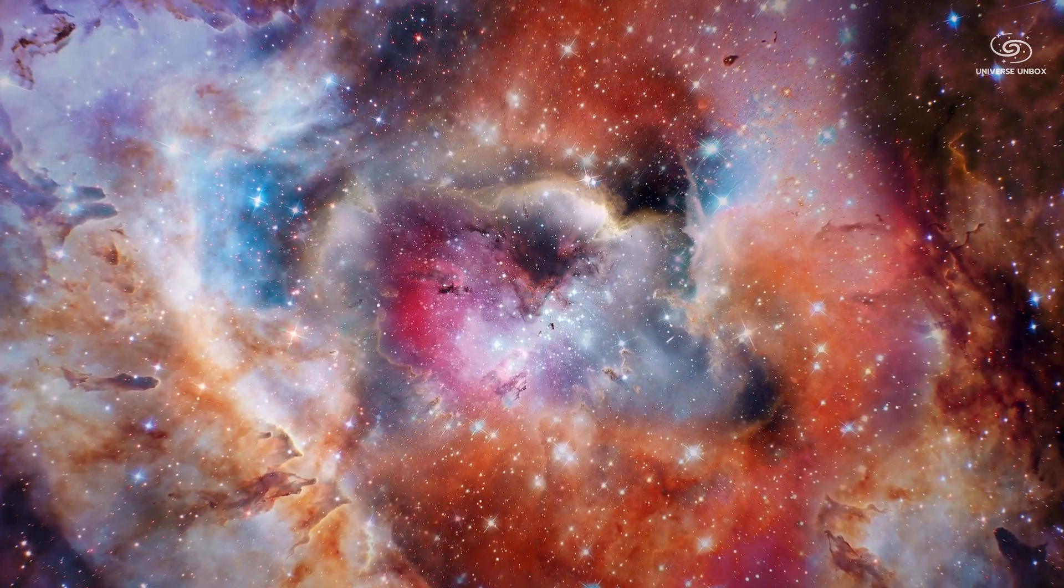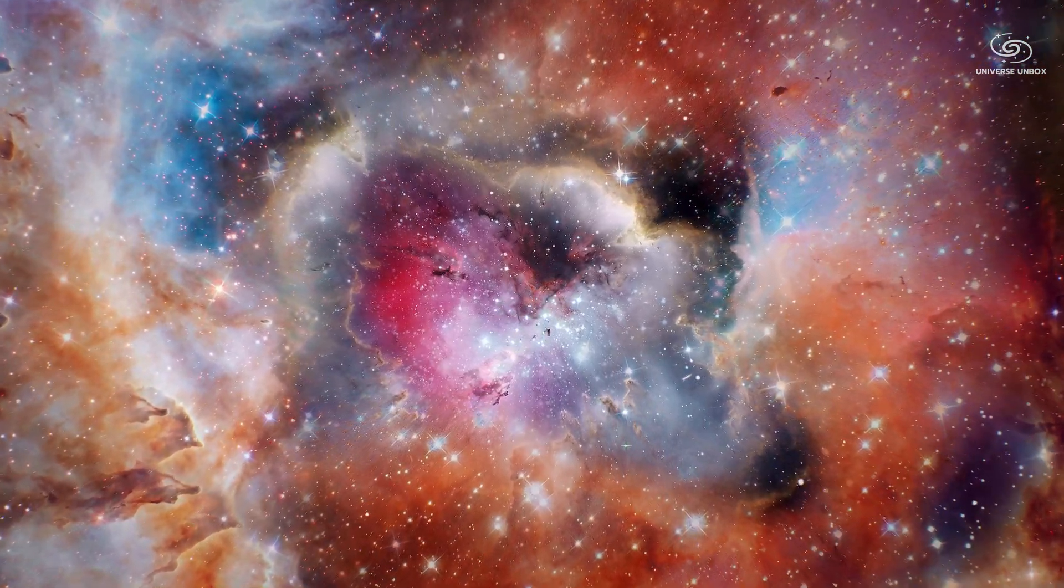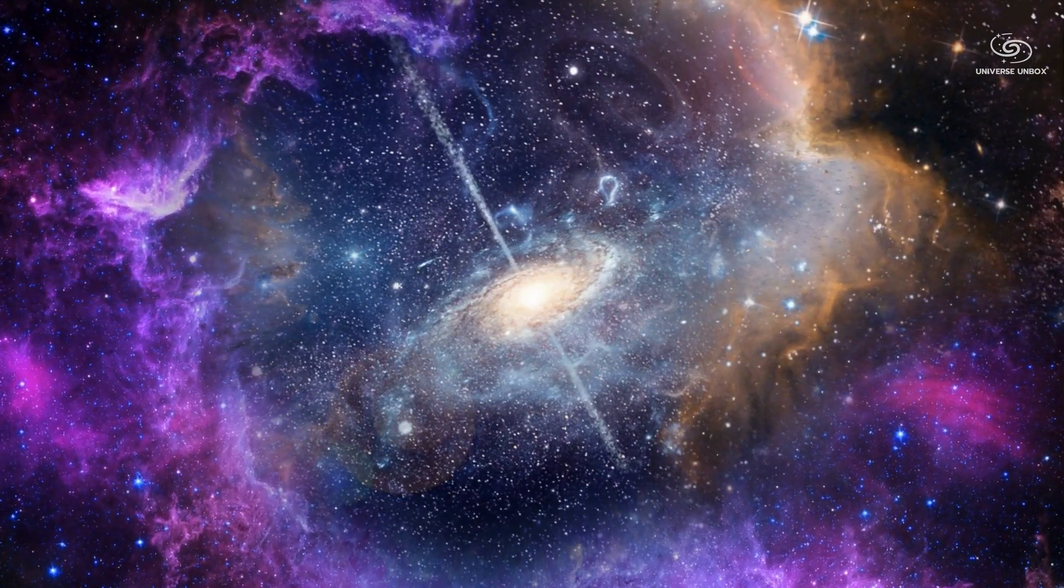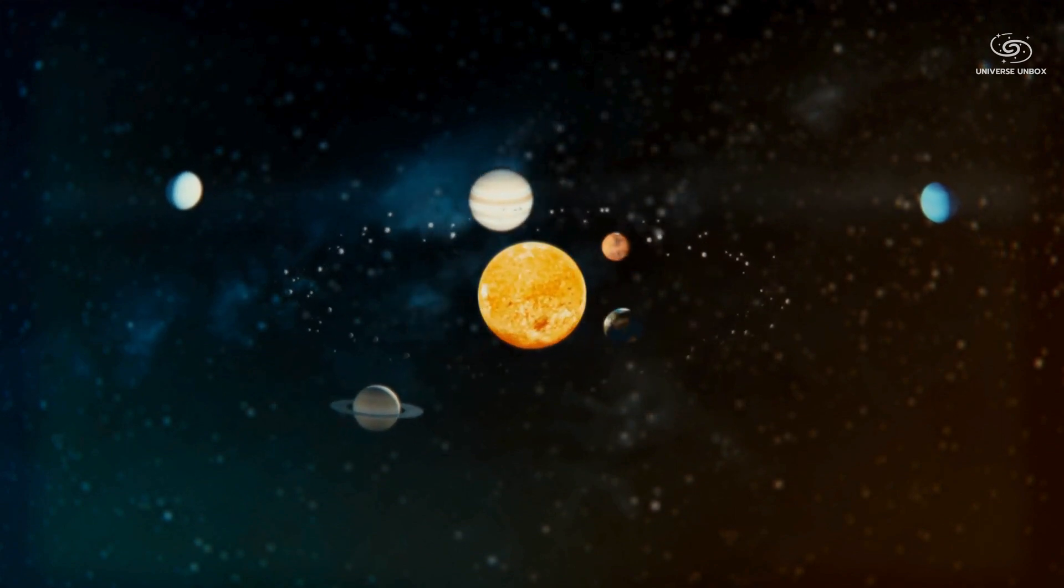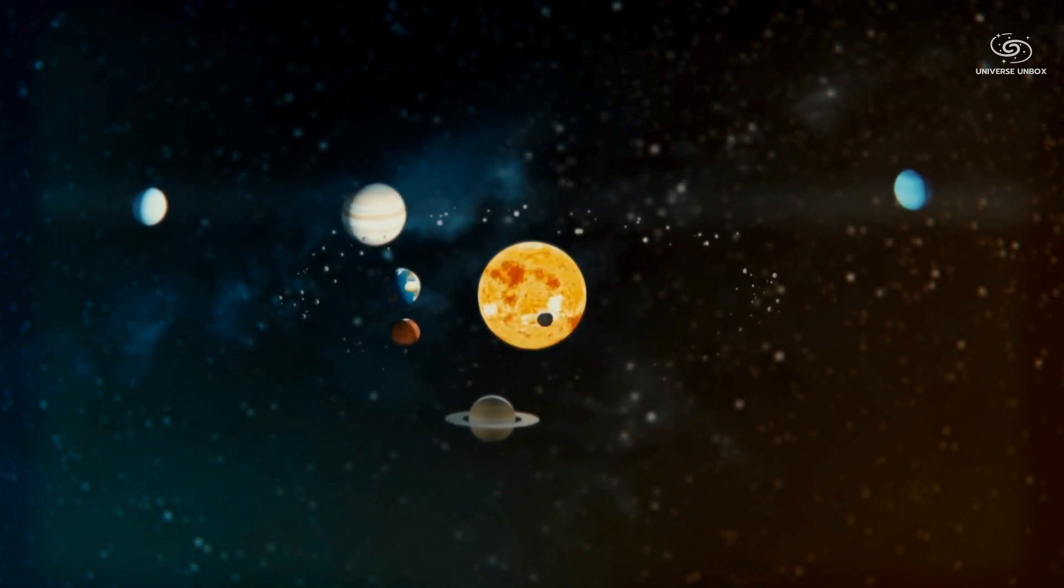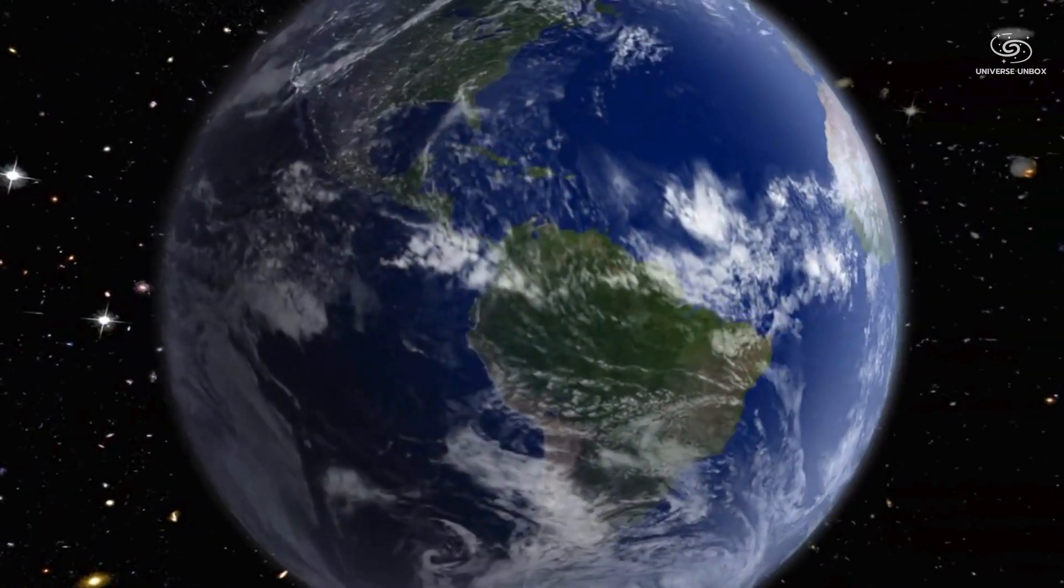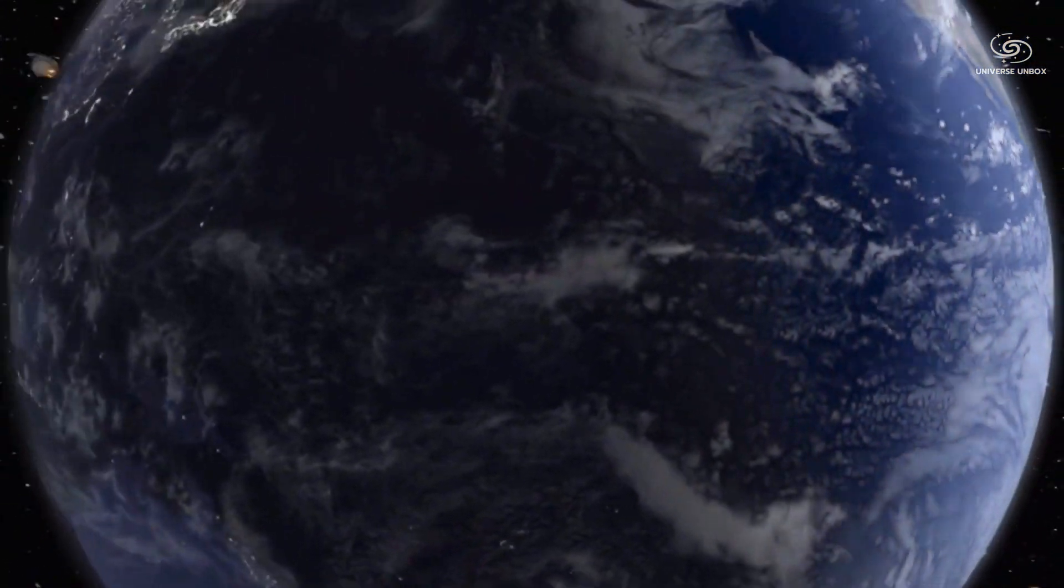First, our universe is like a giant Matryoshka doll. If you open it, you will find a smaller one inside, a galaxy. Within that is an even smaller doll, our solar system, and the tiniest doll is Earth. Each doll has boundaries that we will surpass on our journey.